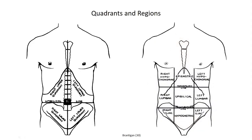Before we get into the specific layers of the anterolateral abdominal wall, it's a good opportunity to introduce the concept of abdominal quadrants, used in clinical practice to localize pain and injury. Two reference lines divide the abdomen into four separate quadrants. The median plane — a mid-sagittal vertical line extending from the tip of the xiphoid process through the umbilicus down to the superior tip of the symphysis pubis — divides the abdomen into right and left sides. The umbilical plane, a horizontal line passing through the umbilicus, divides the abdomen into upper and lower sections.